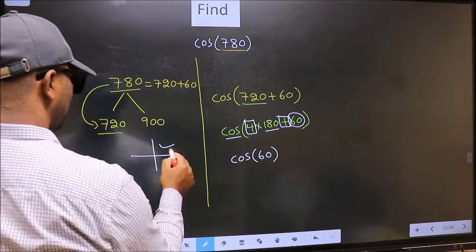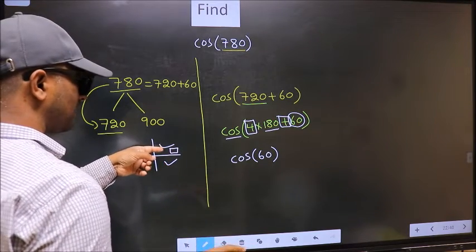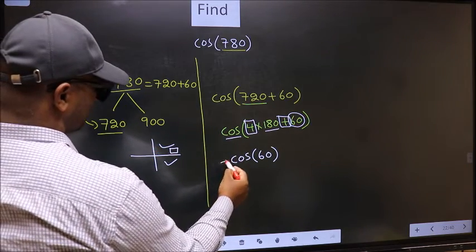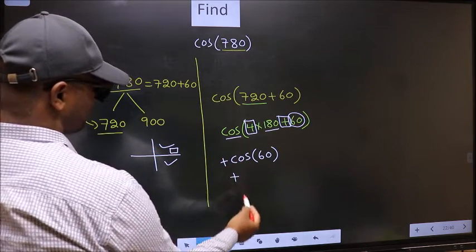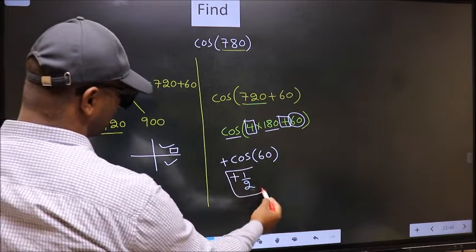That means the angle lies in the first quadrant, and in the first quadrant cos is positive, so we should put plus. So plus cos(60°) is 1/2. This is our answer.